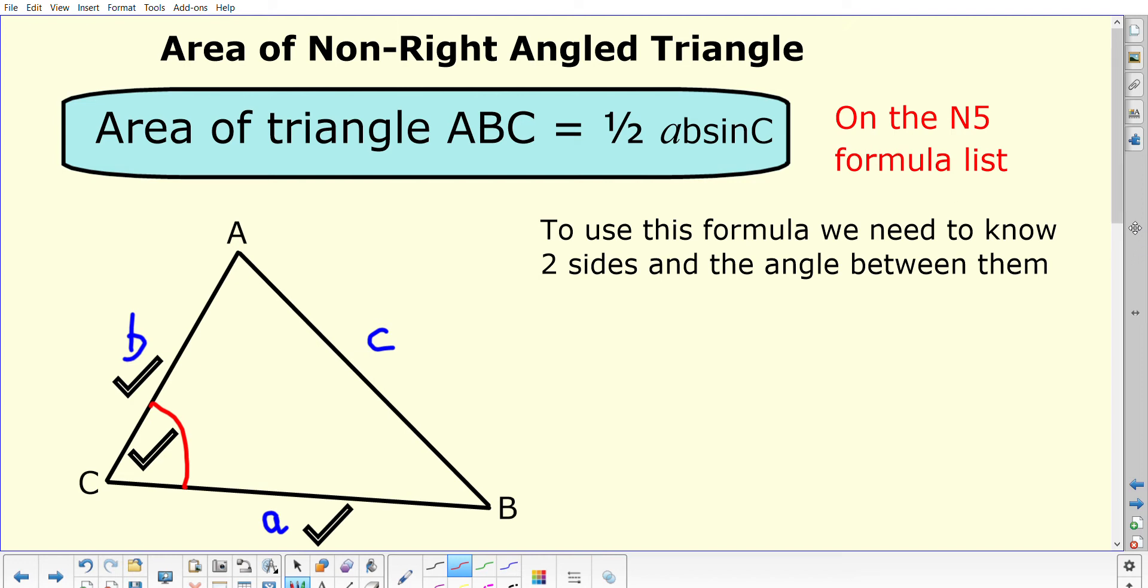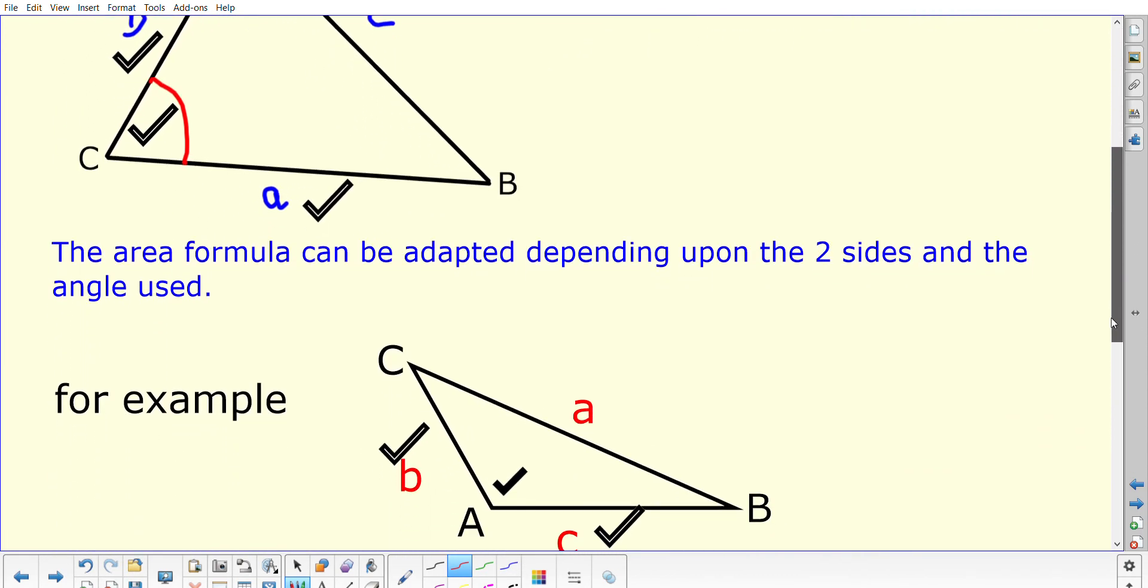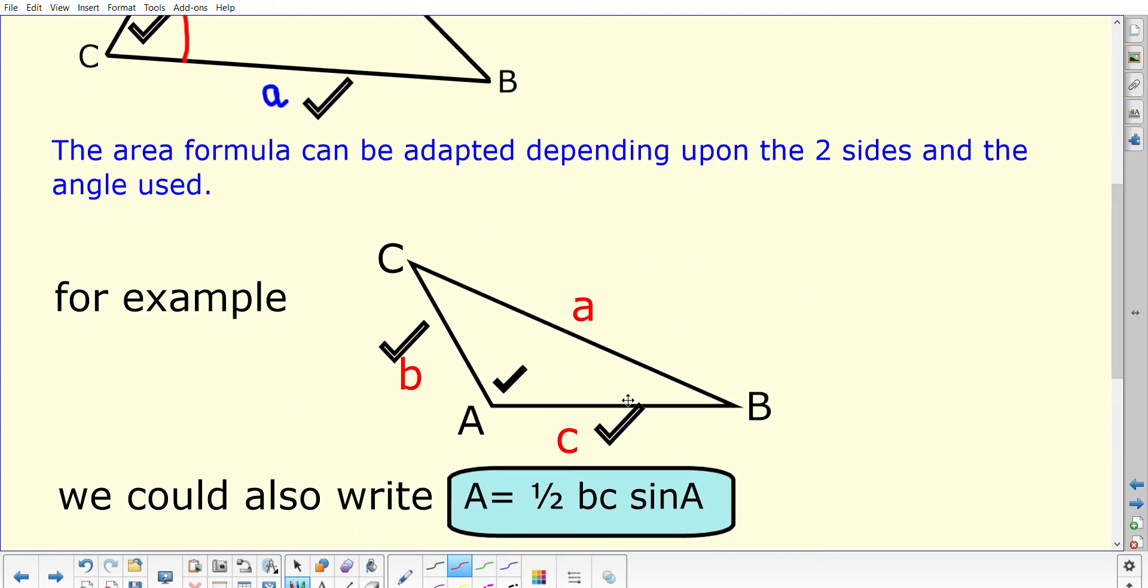This formula appears on the formula list. However, depending on what two sides you're given, you might have to adapt the formula to suit different lettering. For example, if we knew this angle here where capital letter A is, the two sides either side would be lowercase letter b and lowercase letter c. So your formula would become ½bcsinA.